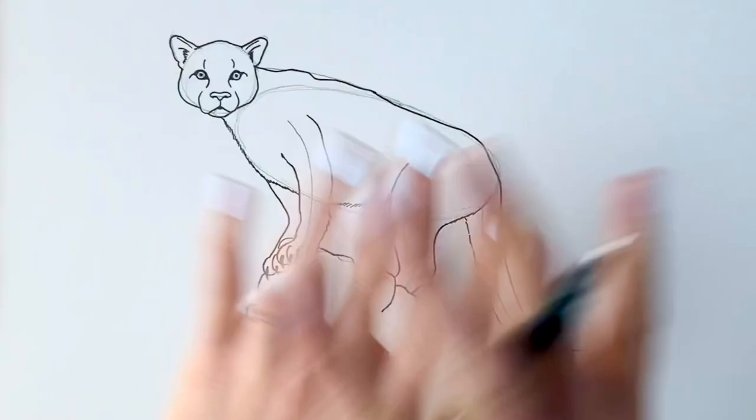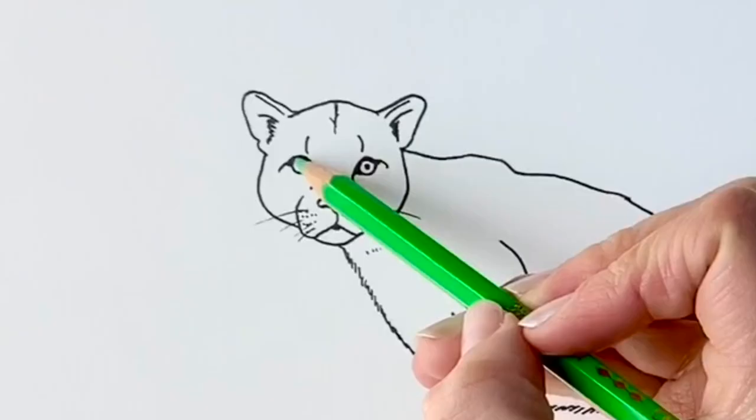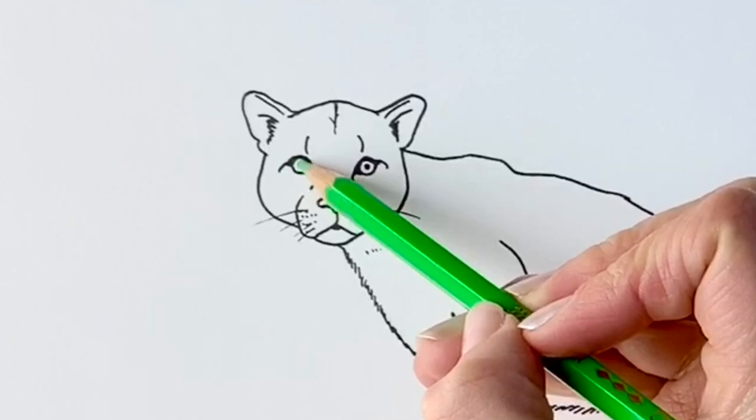Now you don't have to color any of it in, but I'm just going to color in the eyes in green, just a really faint green just to bring it to life. They've got amazing night vision. So just a tiny little touch of color just makes it come alive.